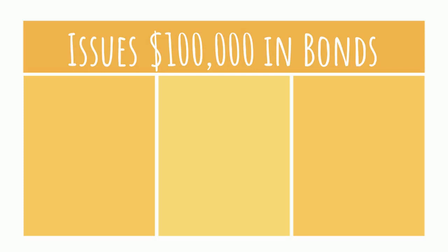Assume a company issues a hundred thousand dollars in bonds. It may or may not receive a hundred thousand dollars in cash. There are three possible scenarios. The first scenario: the company could get a hundred thousand dollars for the bond issue.